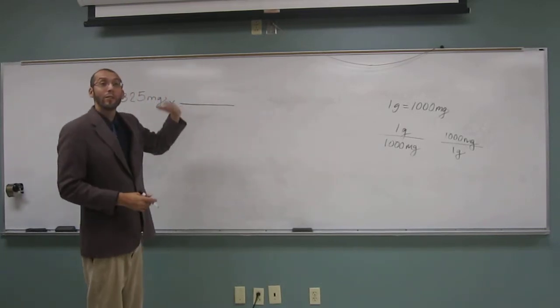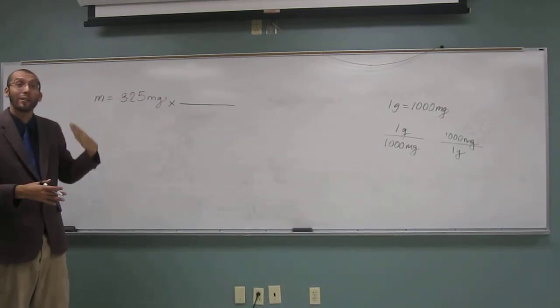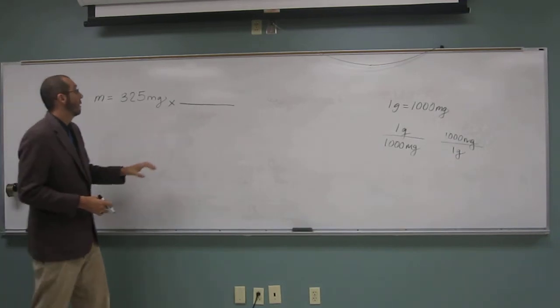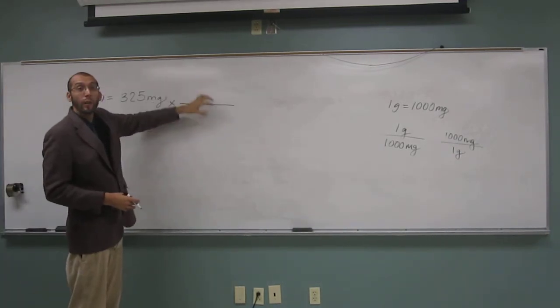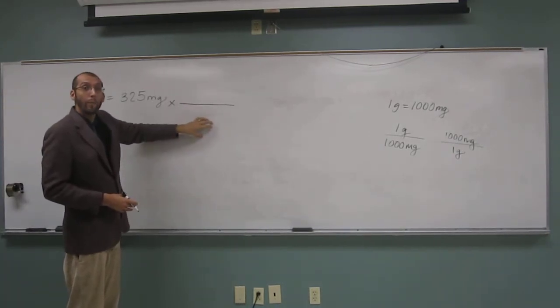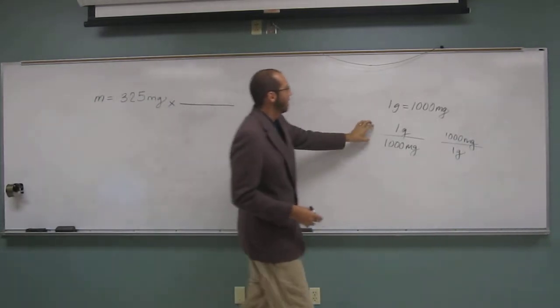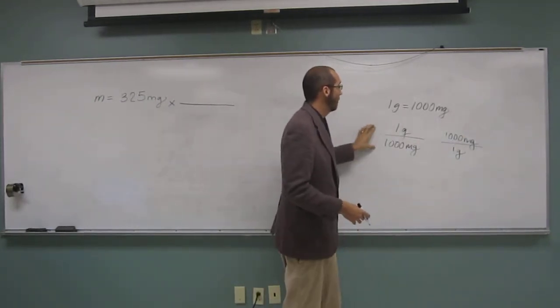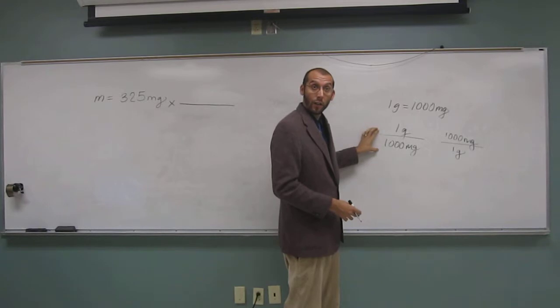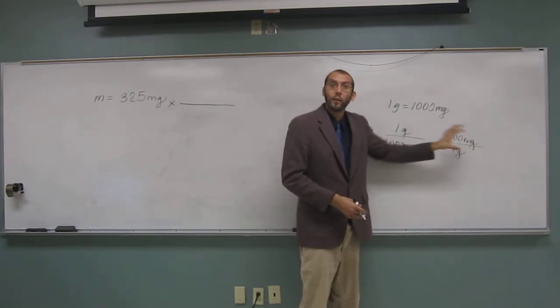So what do we have to do to them? We've got to cancel them out, right? So in order to cancel them out, do we put them up here or down here? On the bottom. So which one of these two conversion factors are we going to use? The left, this one here, the one on the left, or on the right?